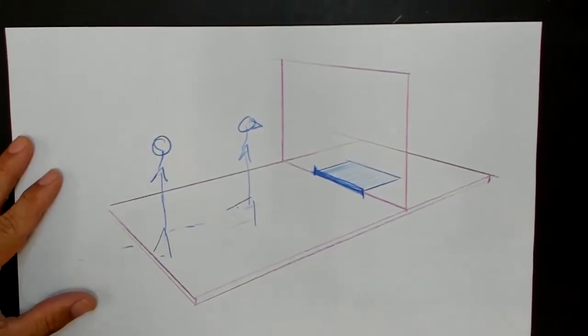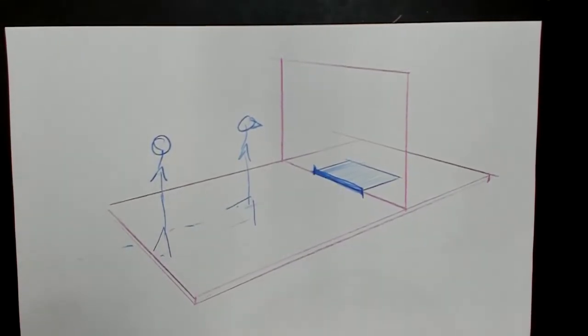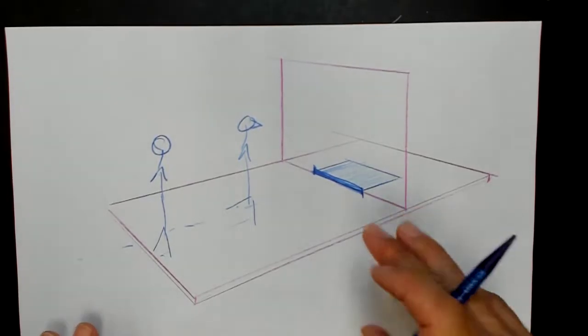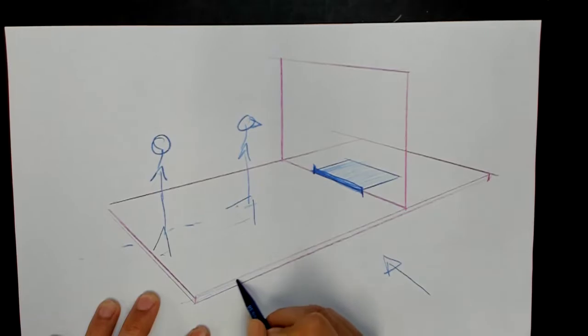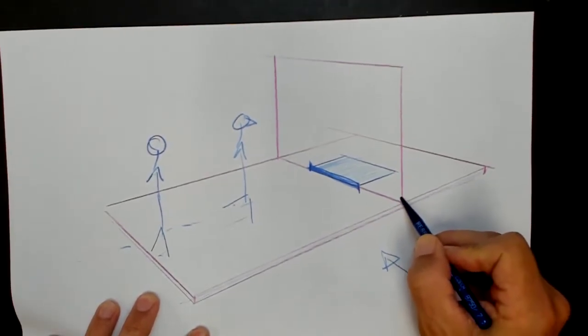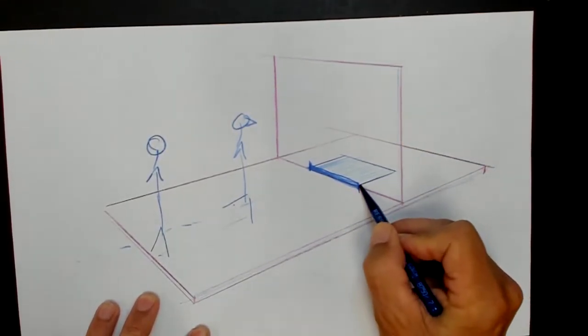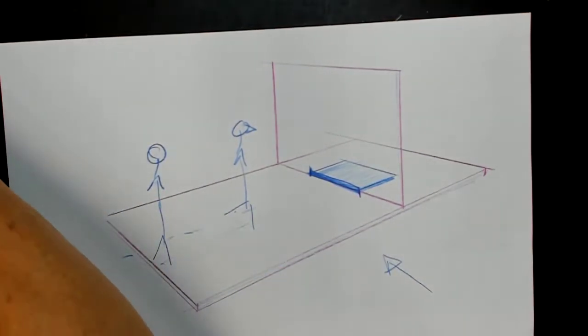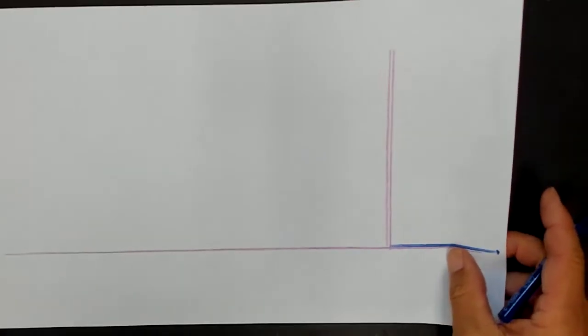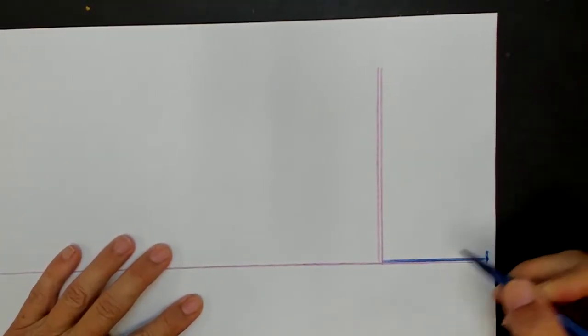I think it's better understood from an elevation view from the side, like looking this direction. So we're just going to see the edge of the floor, and then we're going to see the edge of the picture plane, and then we're going to see this depth. So here's the depth of this object.